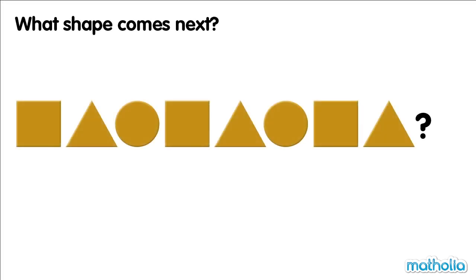What shape comes next? This pattern shows a change in shapes. The repeating part of the pattern is square, triangle, circle. The next shape after a triangle is a circle.